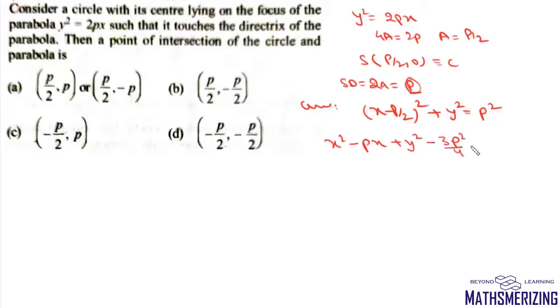Now we need to find the point of intersection of circle and parabola. I'll use elimination, so I'll put y² here. Then I can write x² - px + 2px - 3p²/4 = 0. So there will be 4x² + 4px - 3p² = 0.